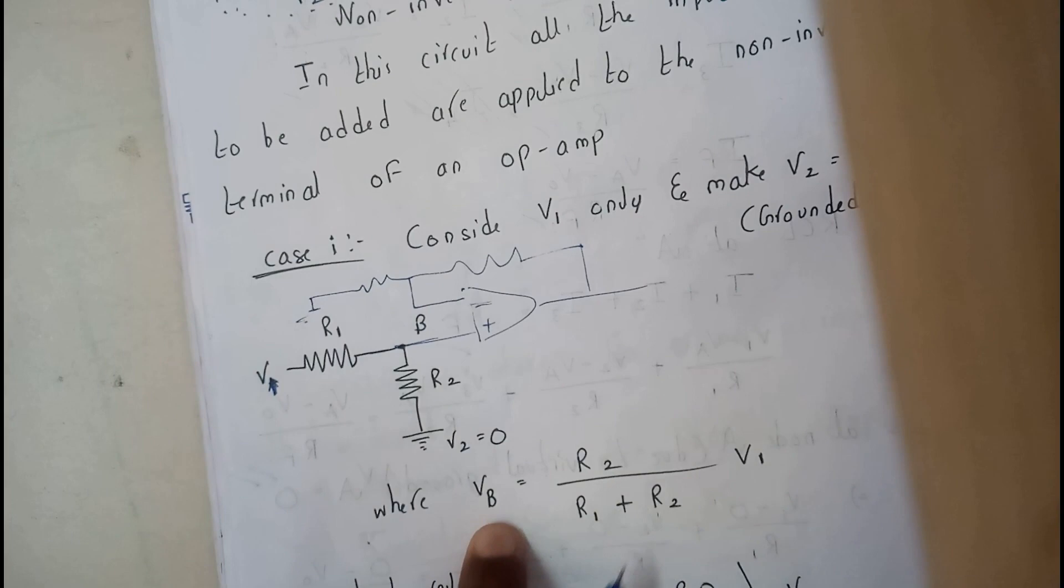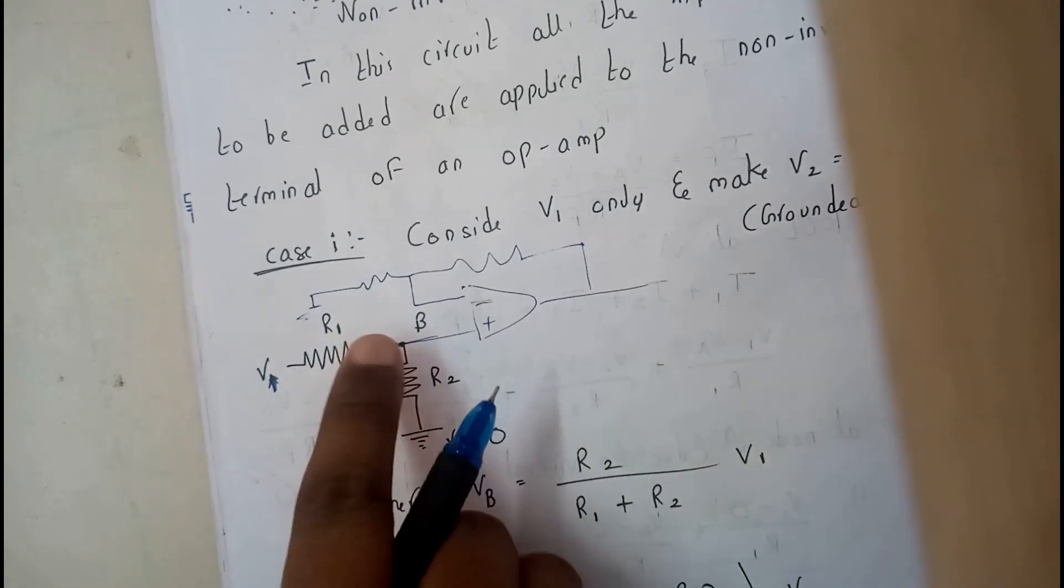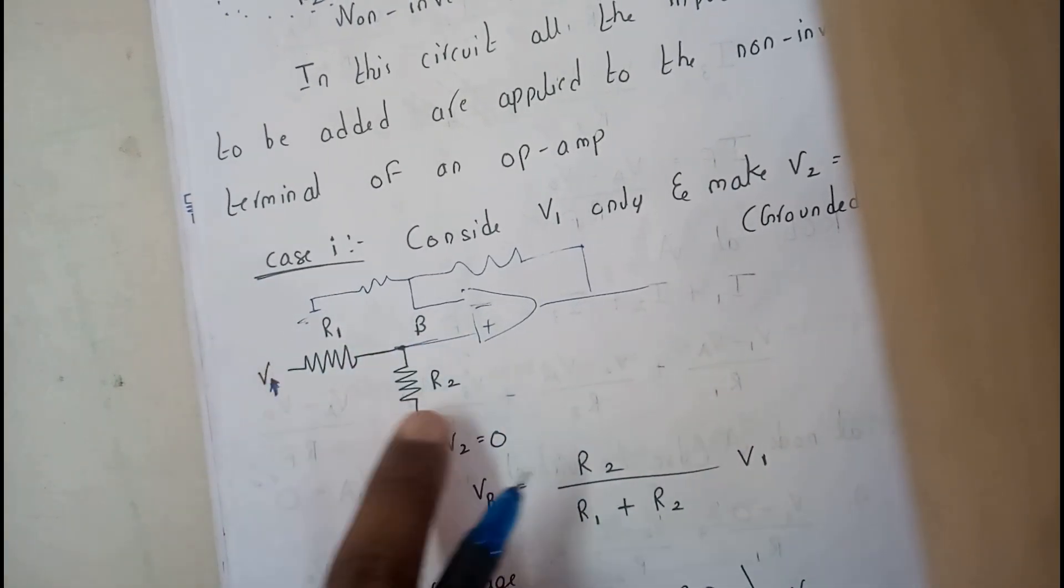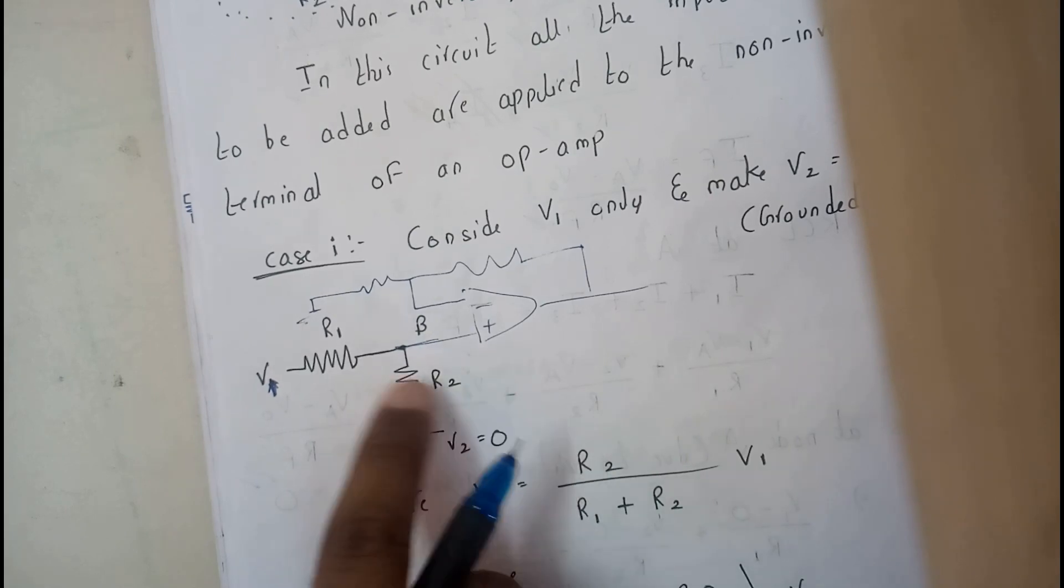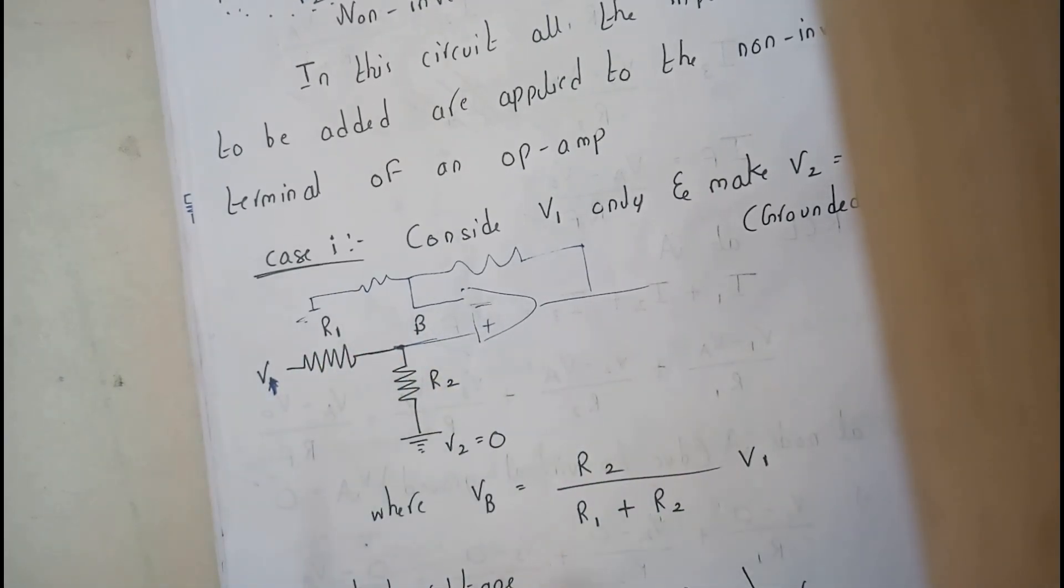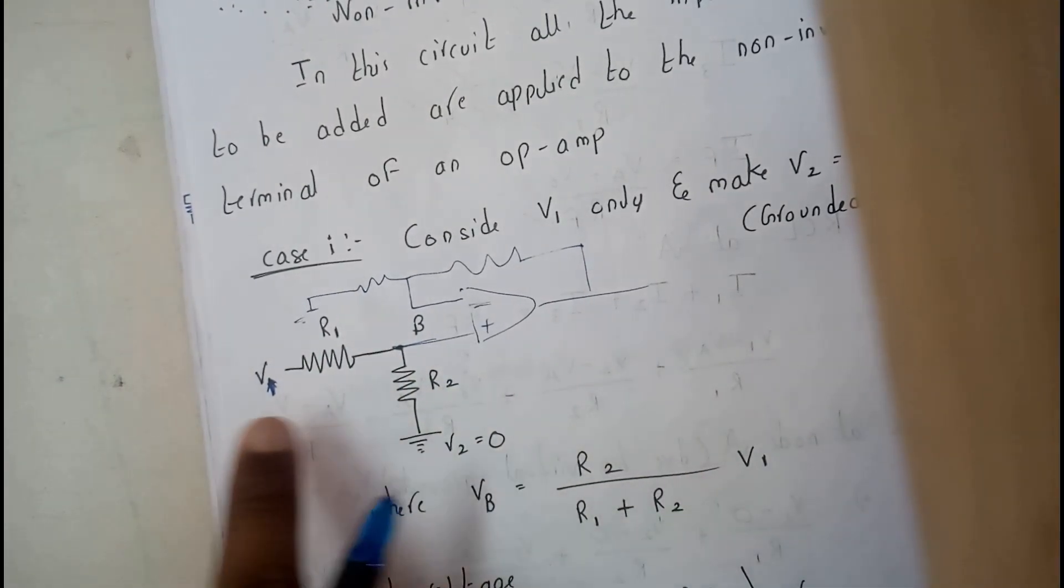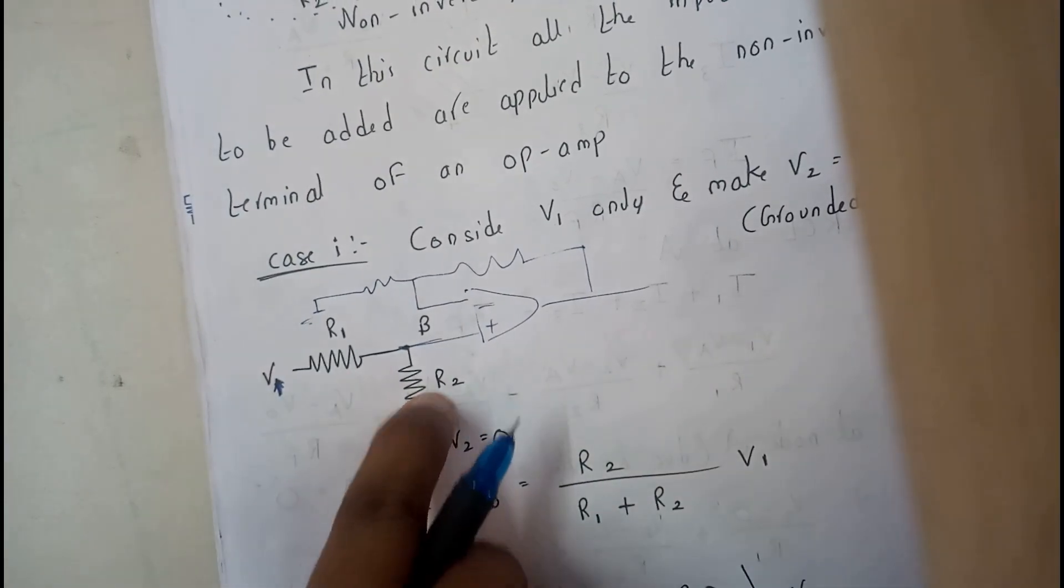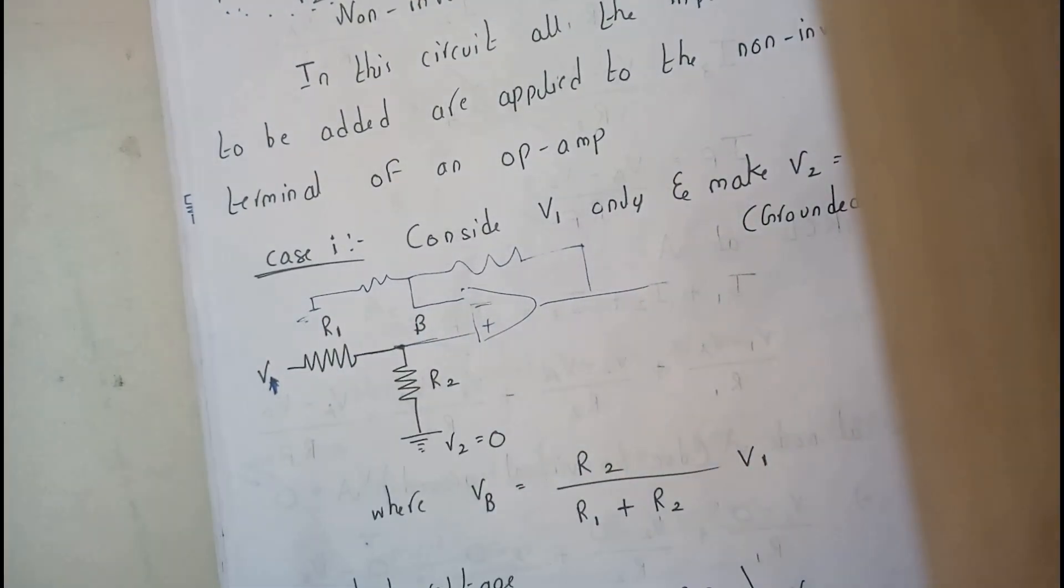So basically VB is nothing but V1 into opposite resistance R2 by R1 plus R2. This is what we called as voltage division rule, V1 into R2 by R1 plus R2.